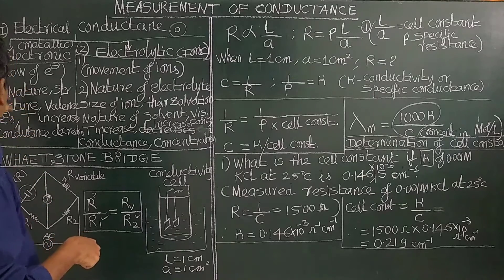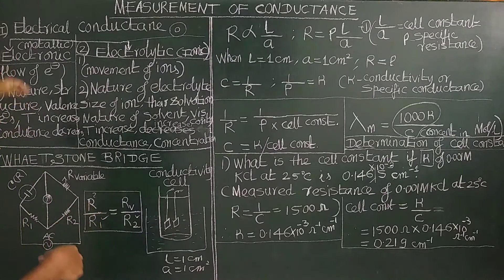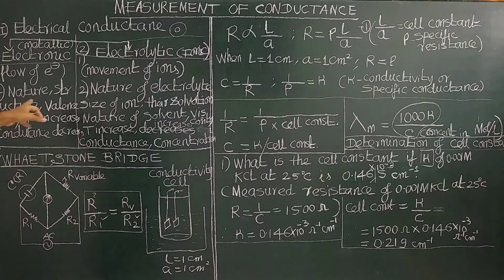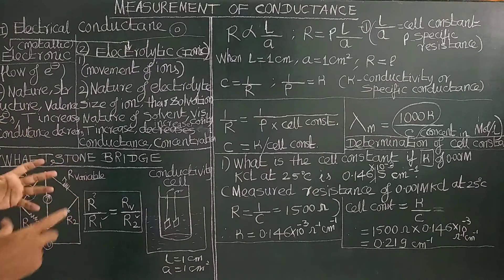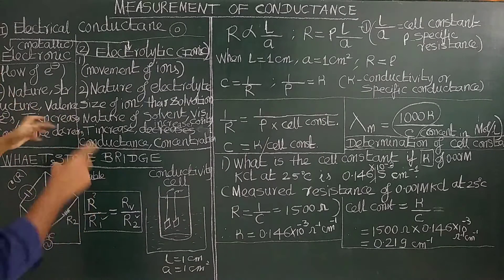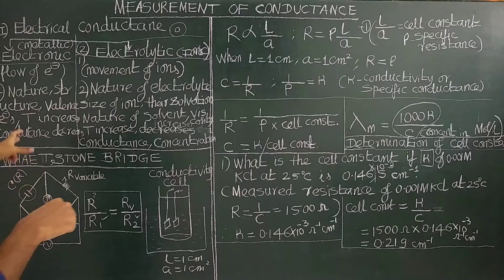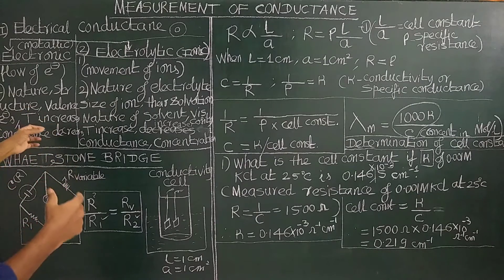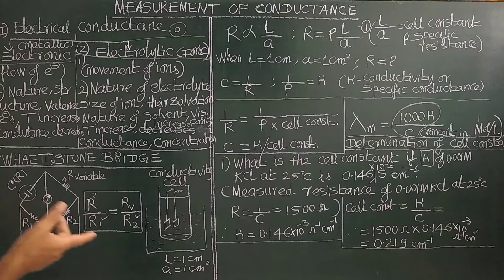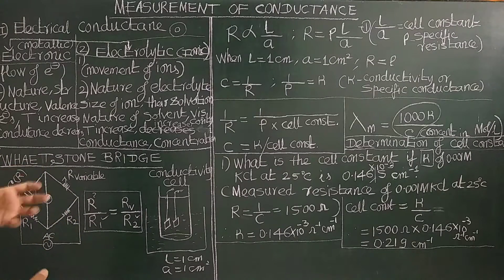The electronic and metallic conductance depends upon the nature of the metal, its structure — BCC, FCC — and the number of valence electrons present in the metal. On increasing temperature, conductance decreases.